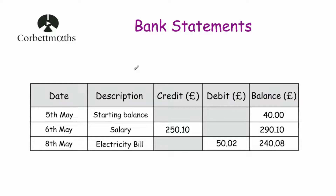So this is an example of a bank statement. We have date, description, credit — that's money being put into the bank account, so that could be your salary, wages, refunds, or any money people have transferred you. Then debit — that's money taken out, such as paying bills, buying something in a shop, a gym membership, or car payments. And balance is how much money is in the account at that particular time.